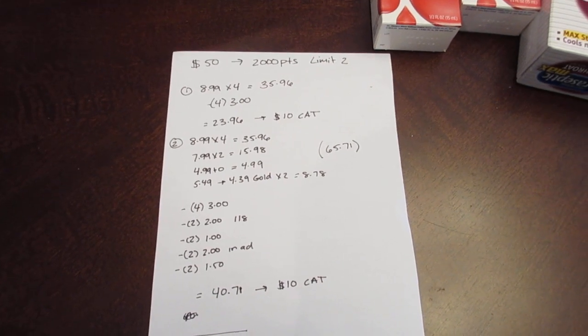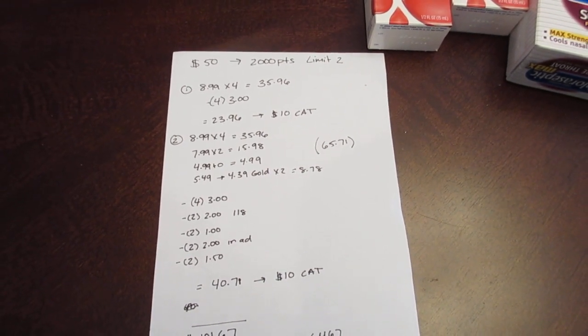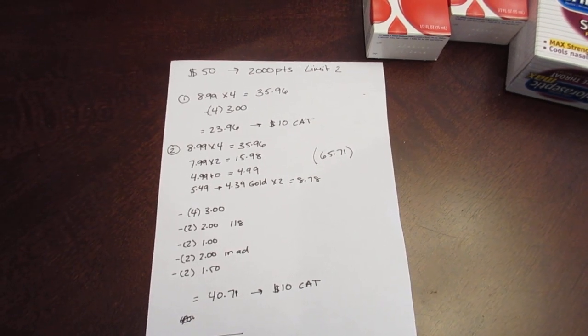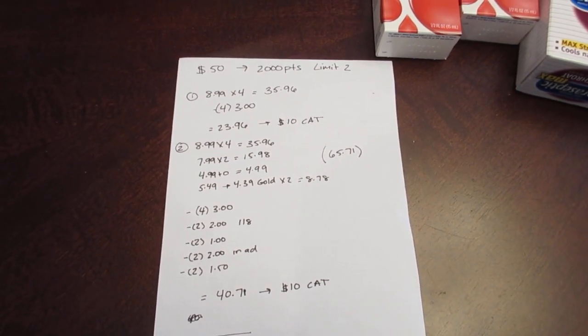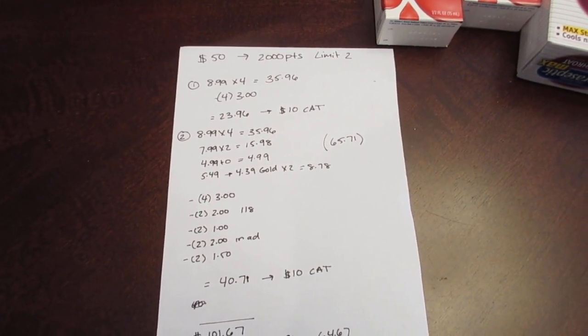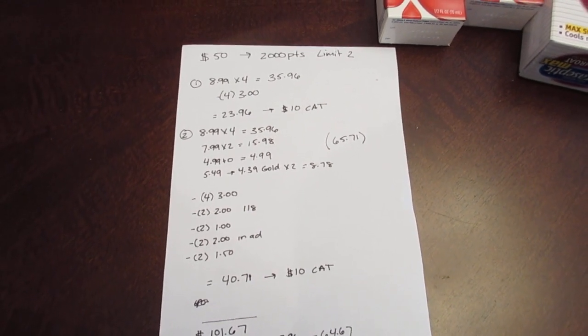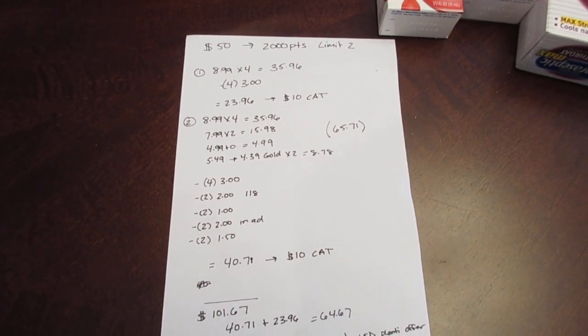And I got a $10 Catalina. The Catalina deal is when you spend $30 on Huggies products, you get a $10 Catalina back. So I got that $10 Catalina. That's why I only did four in that one transaction, to get the $10, and then I did another transaction to get another $10.